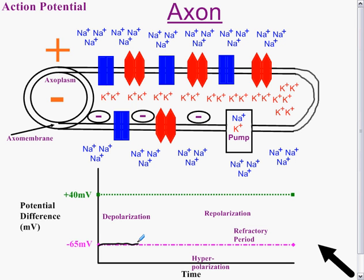But as soon as we get depolarization — something has happened — the trace we would observe would go up until plus 40 millivolts. This is the first part of the action potential, and this is depolarization.